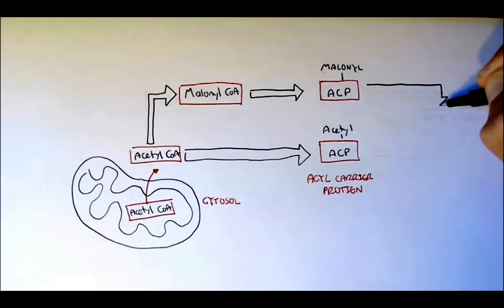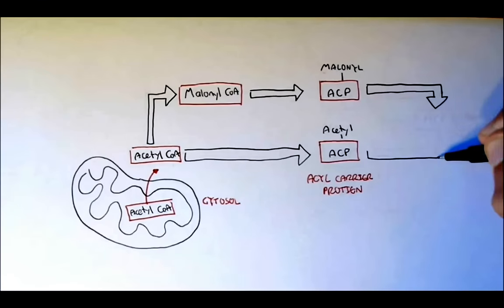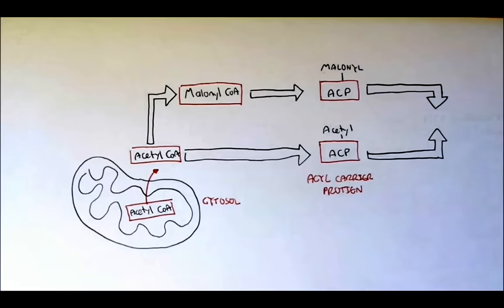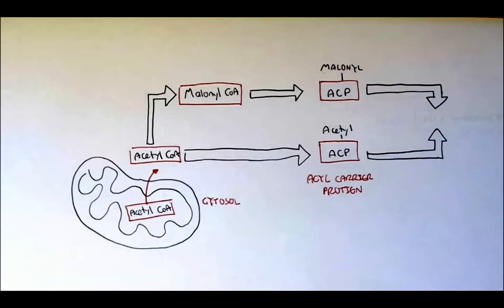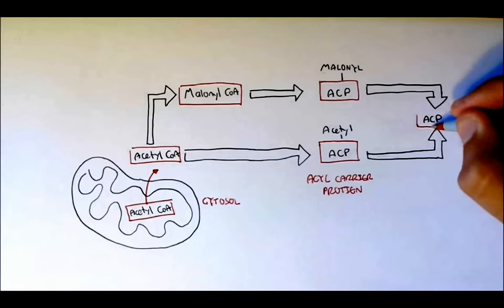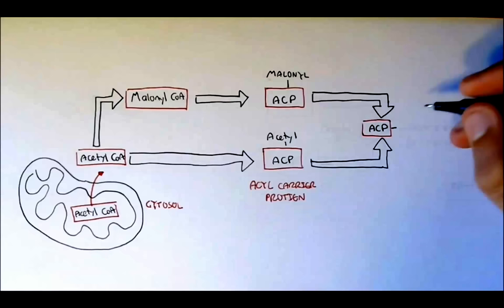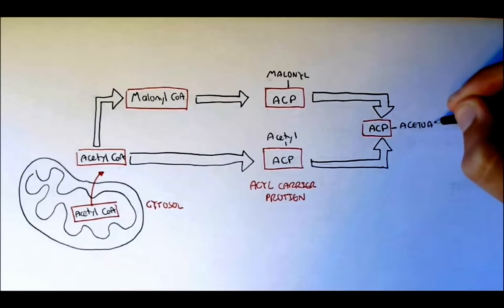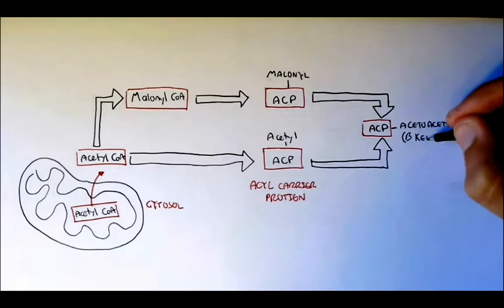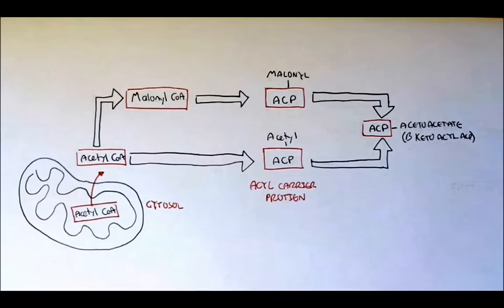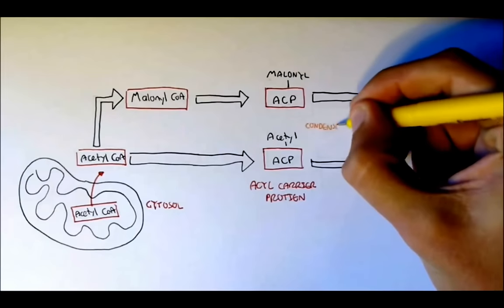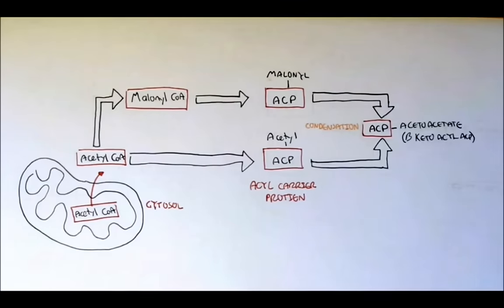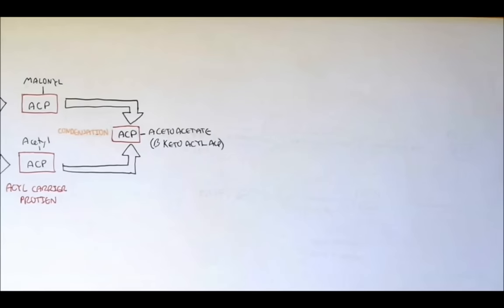Both malonyl-ACP and acetyl-ACP then join together onto only one ACP, forming what's called acetoacyl-ACP. This is also known as beta-ketoacyl-ACP, also known as beta-ketobutyl-ACP. This is done through a condensation reaction.